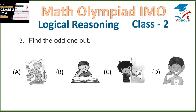Question 3: Find the odd one out. Here we have to see the habits. In the first figure, the boy is washing his hands. In the second, the boy is reading. In section C, the boy is playing with the socket. And in D, the boy is brushing his teeth. All three of A, B, D are good habits and C is a bad habit. So option C is correct.